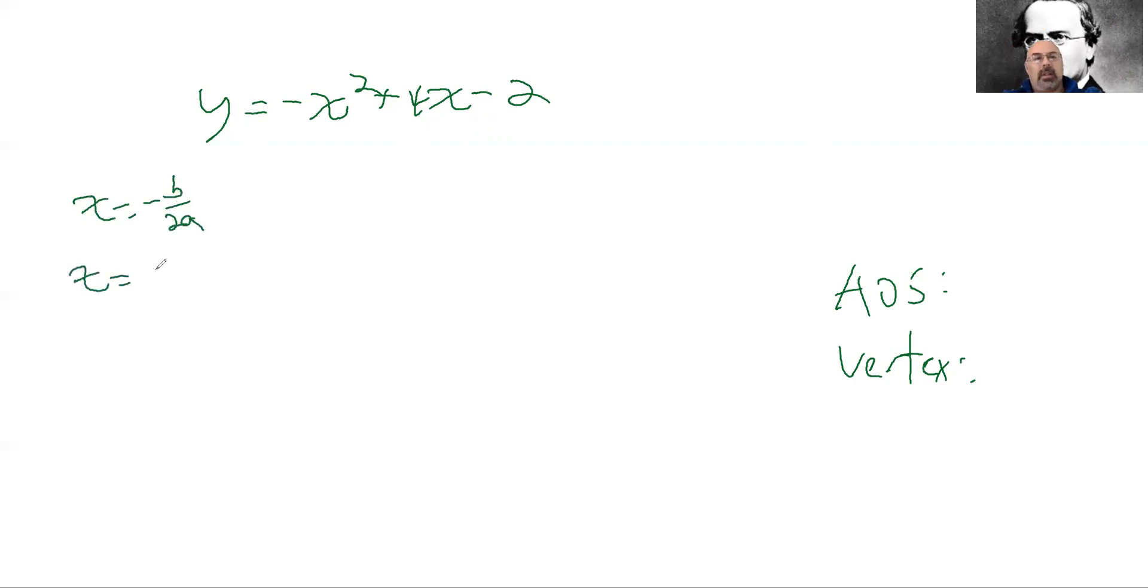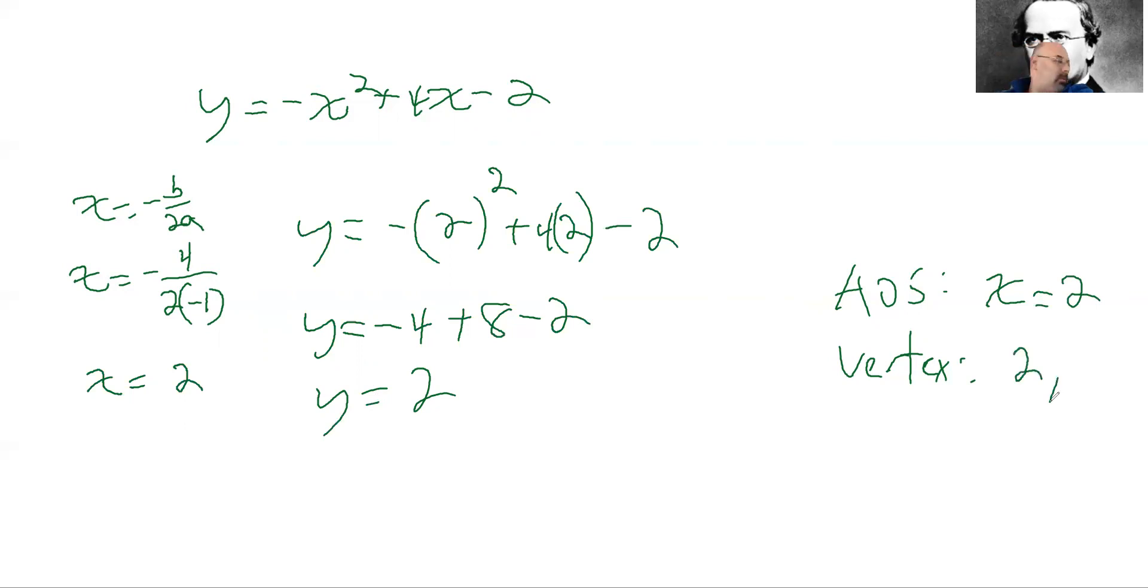So my axis of symmetry is going to be x equals negative b over 2a. x equals negative b is positive 4, 2 times negative 1. Simplify that. I get x equals positive 2. Plug that into my equation. y equals negative 2 squared plus 4 times 2 minus 2. Simplify. y equals negative 4 plus 8 minus 2. y equals positive 2. So my axis of symmetry is x equals 2. And my vertex is 2 comma 2.